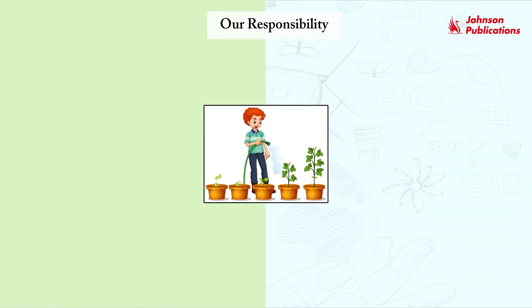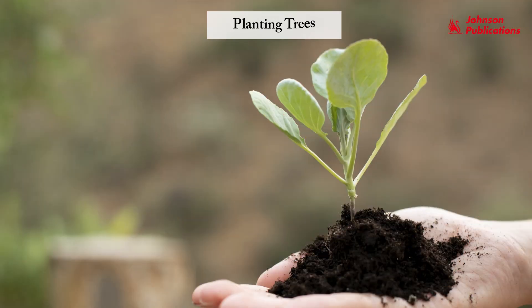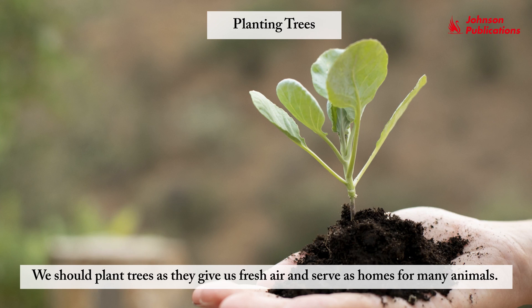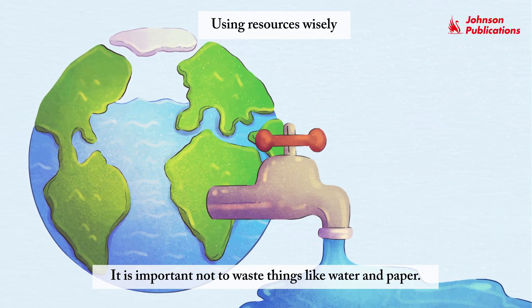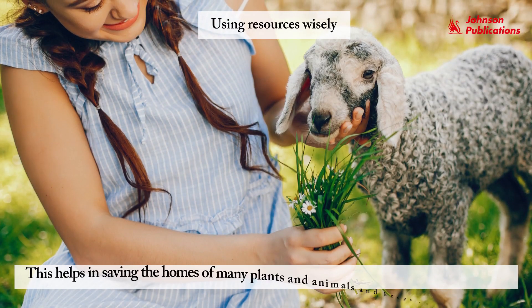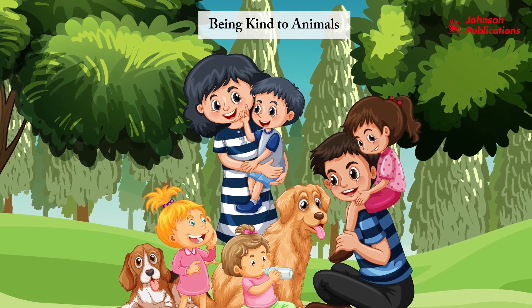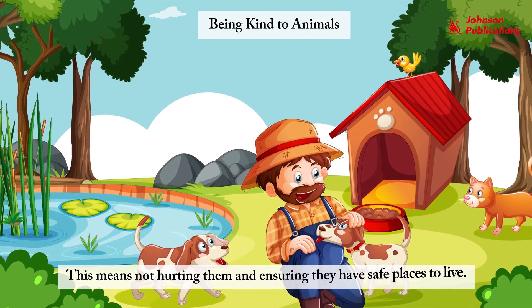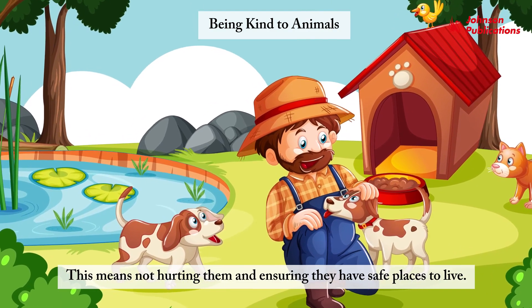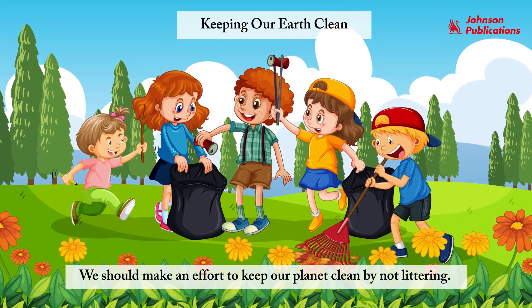Our responsibility. We must protect and care for both plants and animals. Planting trees: we should plant trees as they give us fresh air and serve as homes for many animals. Using resources wisely, it is important not to waste things like water and paper. This helps in saving the homes of many plants and animals and keeps our world clean. Being kind to animals, we should be good friends with animals — not hurting them and ensuring they have safe places to live. We should also make an effort to keep our planet clean by not littering.